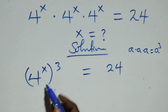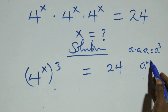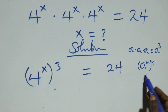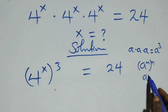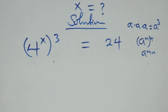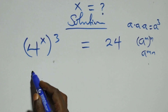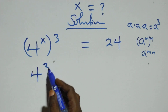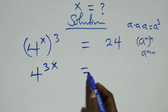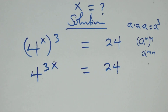This follows the law of indices: when we have a raised to power m, raised to power n, this is the same thing as a raised to power m times n. So here this power multiplies and we have four raised to power 3x equals twenty-four on this side.